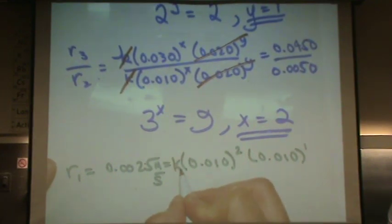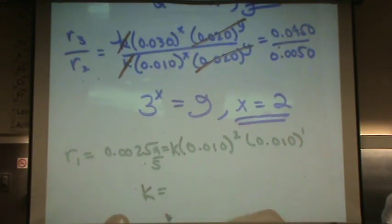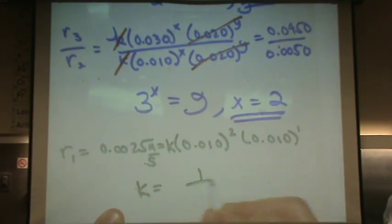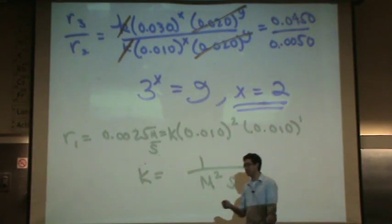Oh, I forgot k. So, you'd solve for k. I didn't solve for it, but it would have units similar to the previous problem we did. Molarity squared over seconds. So, again, this has an overall order of three. They don't always have an overall order of three, but it just happens for this one to be similar to the previous one we did.